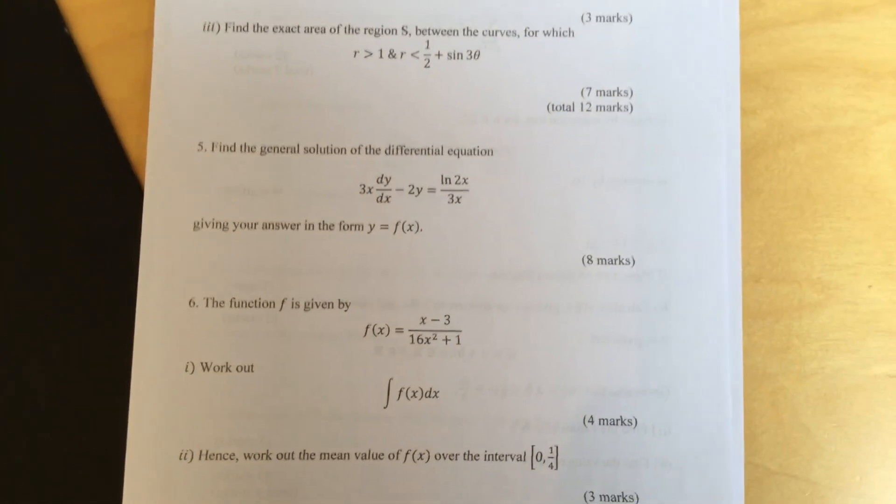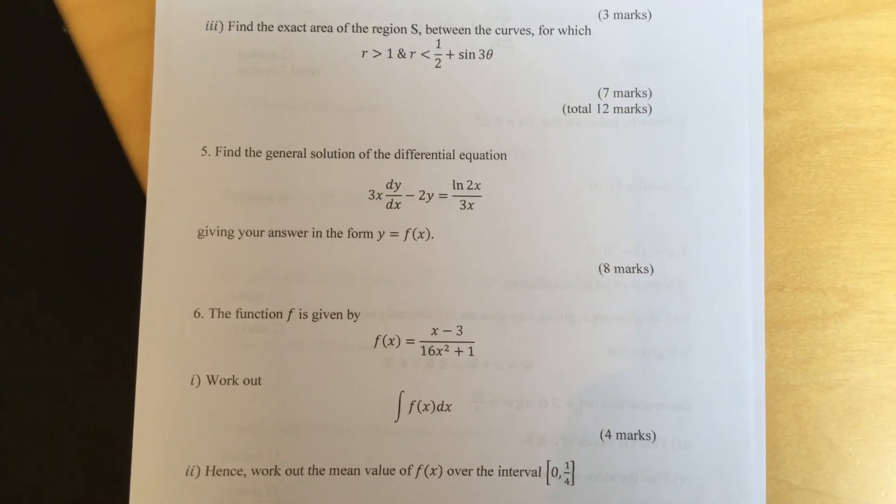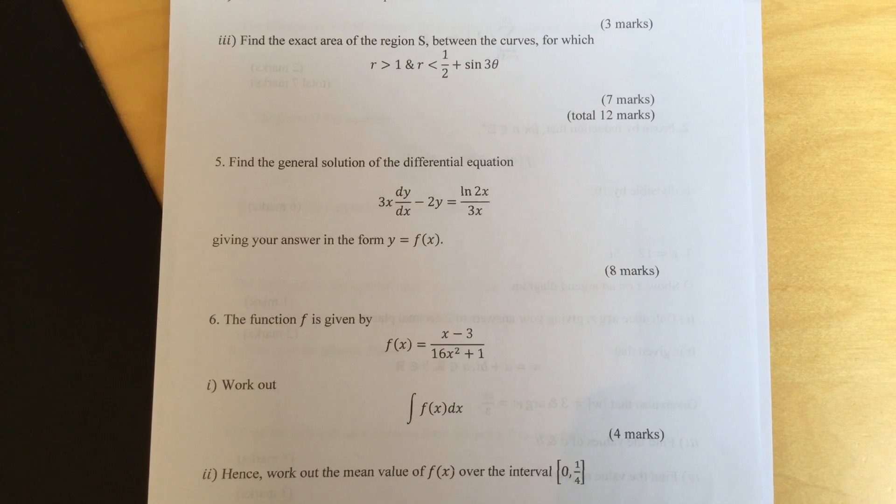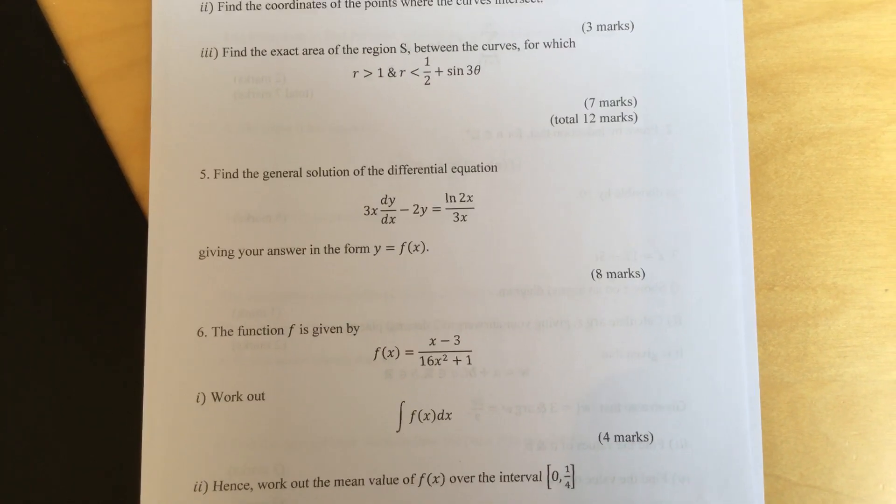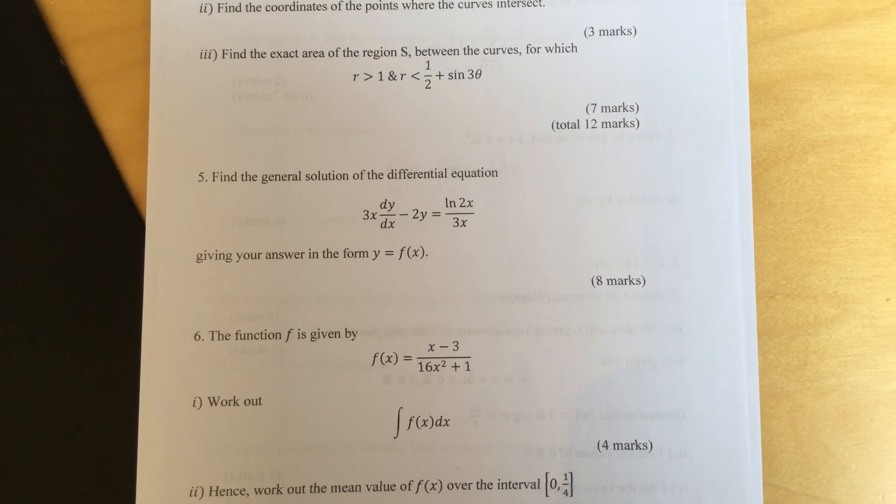Question five. Find the general solution of the differential equation 3x dy/dx minus 2y equals ln 2x over 3x, giving your answer in the form y equals f of x.